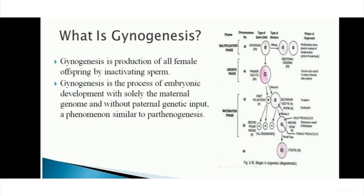Chromosome manipulation is mainly of two types: gynogenesis, where the offspring carries only the mother's genes, and androgenesis, where the offspring is completely identical to the father and has all the genes of the father.